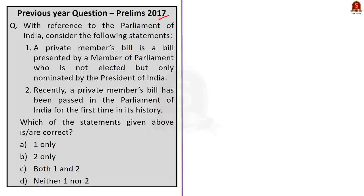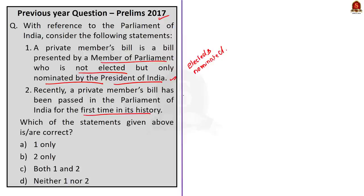Let us take up the first question — a previous year question from the 2017 prelims. Two statements are given and we have to find the correct one. Statement one says: a private member's bill is a bill presented by a member of parliament who is not elected but only nominated by the president of India. This statement is incorrect — an MP other than a minister is a private member, including both elected and nominated members. Statement two says: recently, a private member's bill has been passed in parliament for the first time in its history. This is also incorrect — no private member's bill has been passed by parliament since 1970. Parliament has passed 14 private member's bills in total, all before 1970. So the correct answer is option D, neither one nor two.